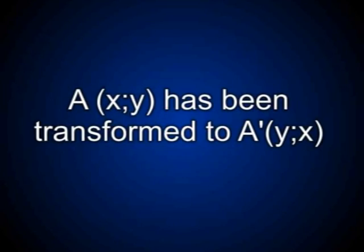The last bit of work we will be looking at under transformations is called the inverse. An inverse is quite simple: all it is is our x values now become our y values, and our y coordinates become our x coordinates. The translation reads A(x, y) → A'(y, x) — meaning x has become y, and y coordinates have become x.